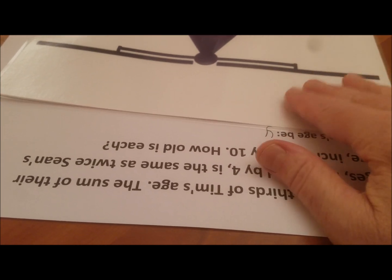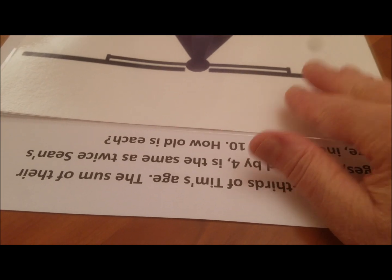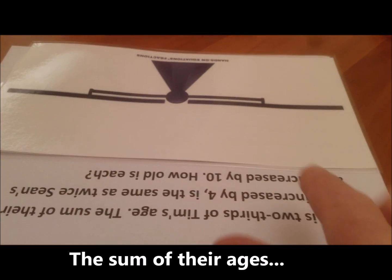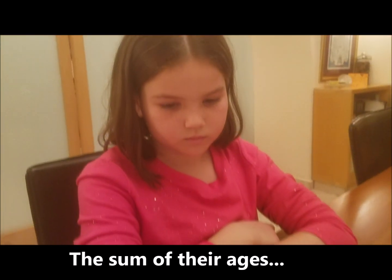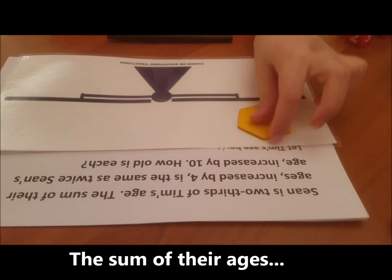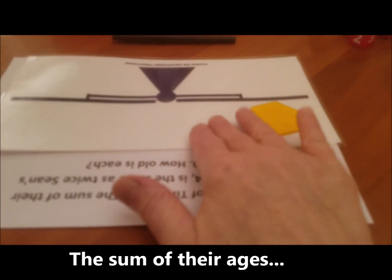Now, what we're going to do is set up the problem on our scale. We're told that the sum of their ages, so the sum means we want to add the two ages together. Would you place Tim's age over here, please? Would you place Sean's age over here, please?